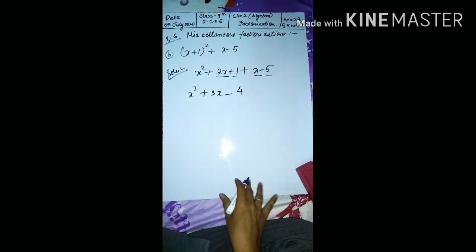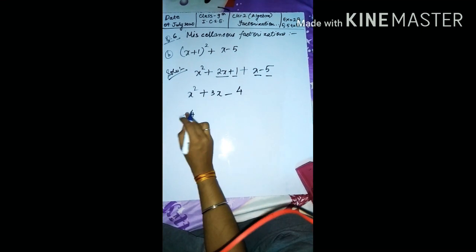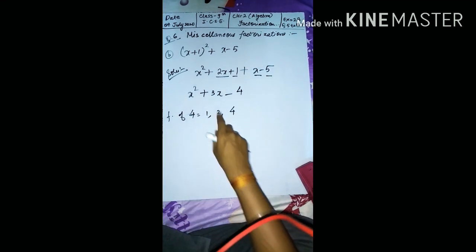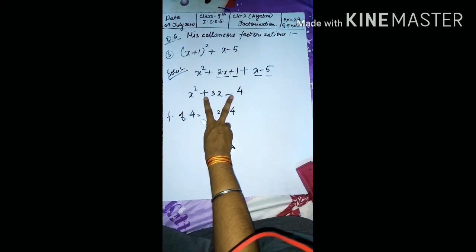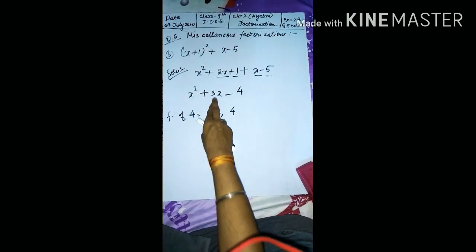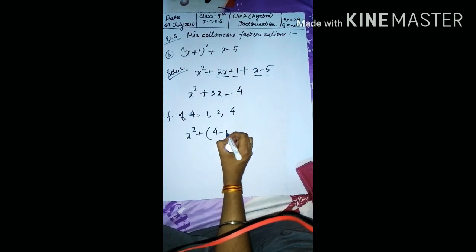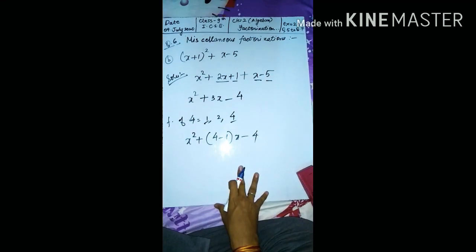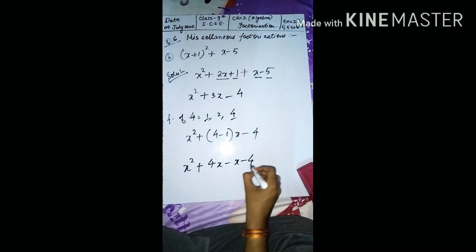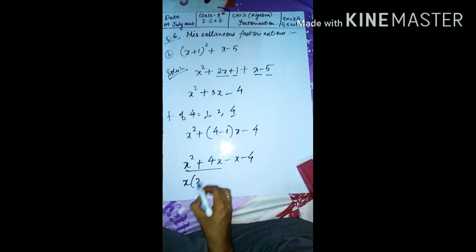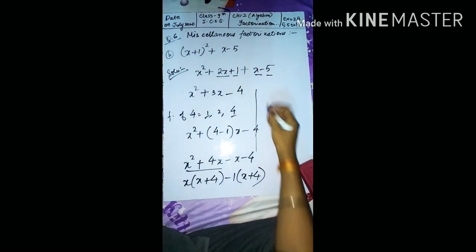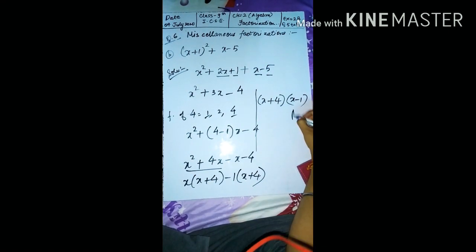Now we factorize x² + 3x − 4. The factors of 4 are 1, 2, and 4. This is a minus case, so we look for subtraction: 4 − 1 = 3. So we write x² + 4x − x − 4. Take x common: x(x + 4), and take −1 common: −1(x + 4). Then (x + 4) is common, leaving (x + 4)(x − 1). That is the final answer.